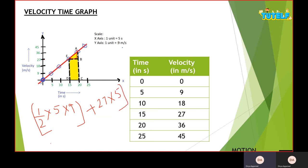Since the area under the velocity-time graph gives displacement, the unit would be meters. Calculating: 9 times 5 divided by 2 is 22.5, plus 27 times 5 is 135. So the total displacement is 157.5 meters.